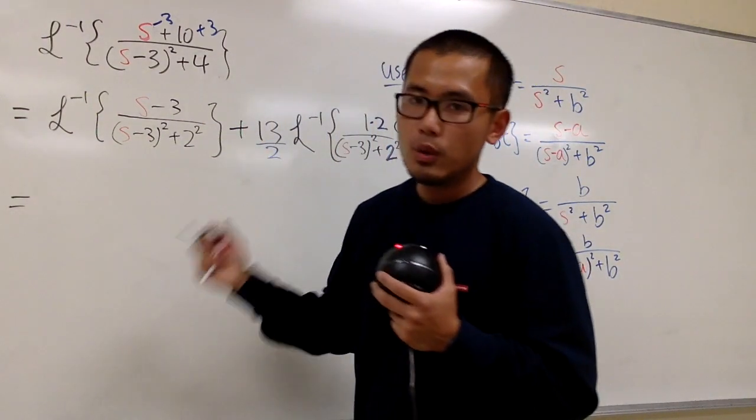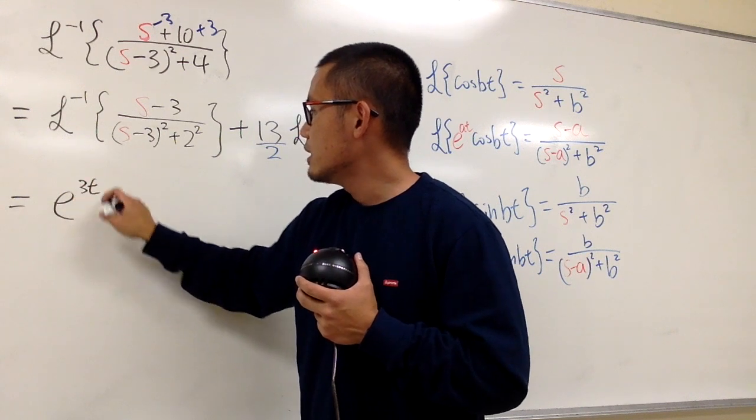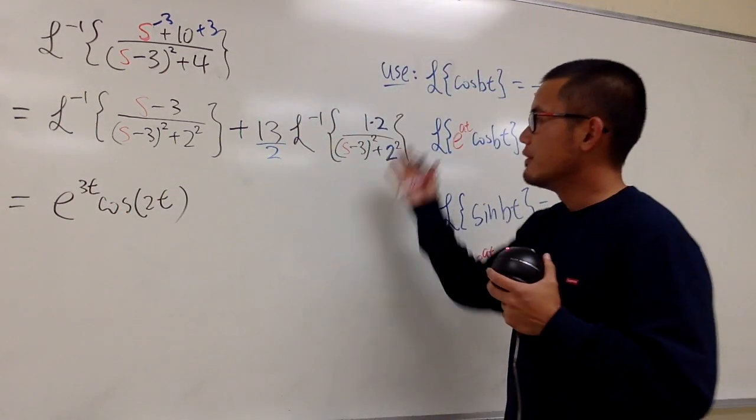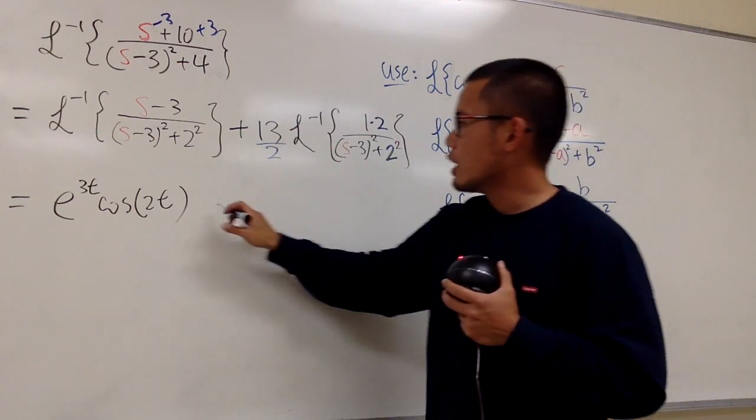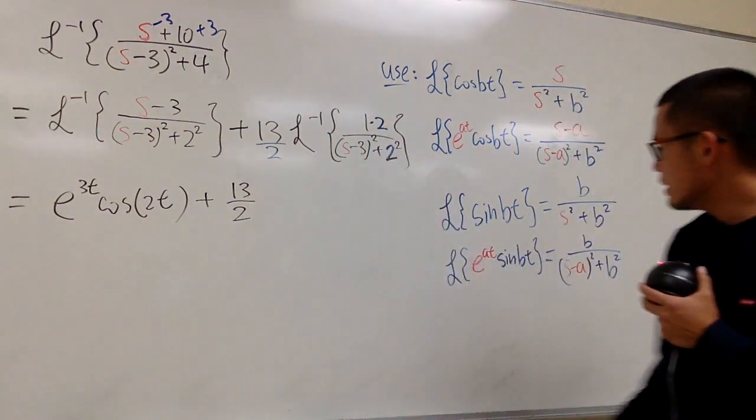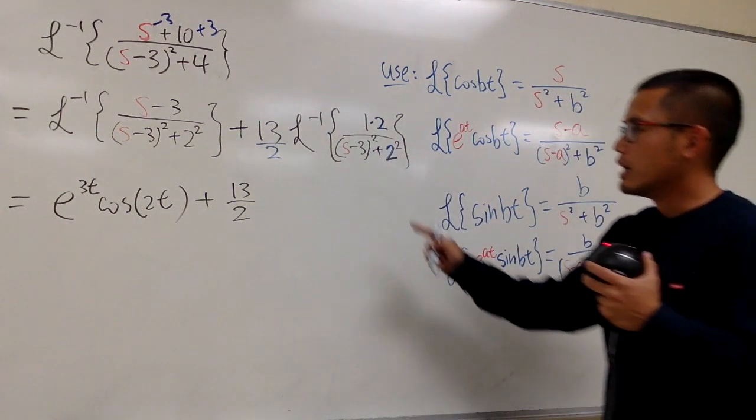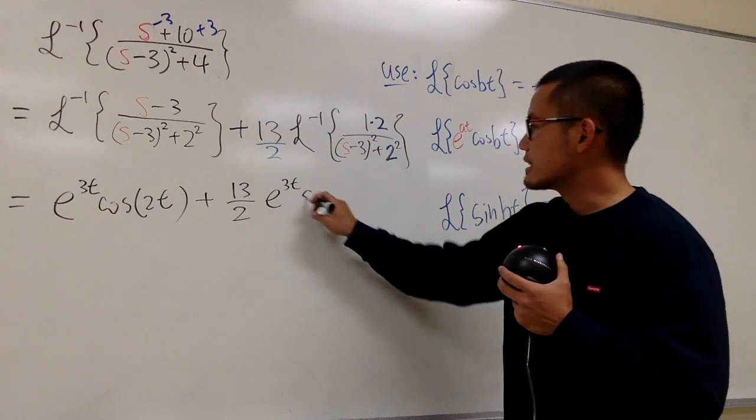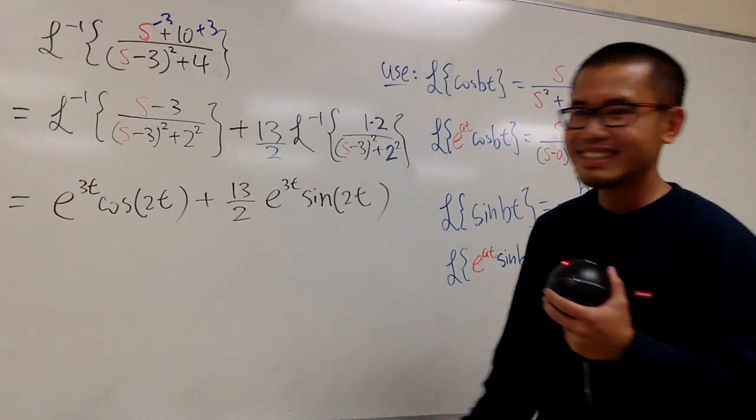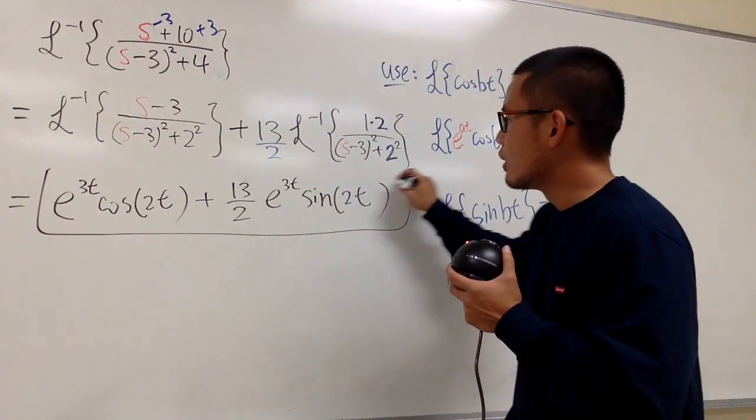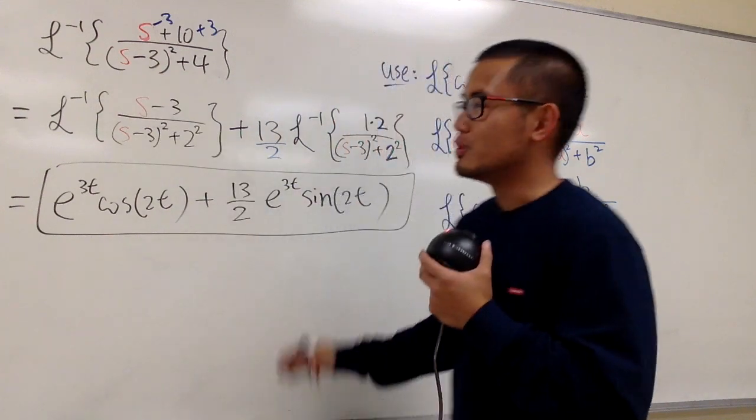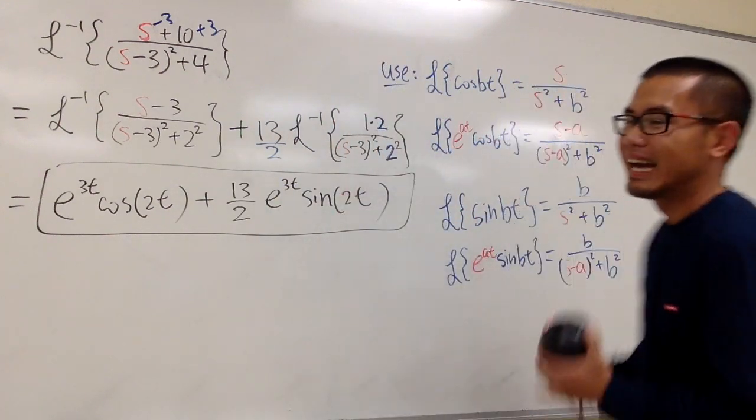This part, just like earlier, will be e to the 3t times cosine of 2t. For this part right here, we know this is plus 13 over 2, and this is going to be e to the 3t times sine of 2t. So this is how you take care of the situation if this right here does not match with that. Be sure you make it match. And that's it.